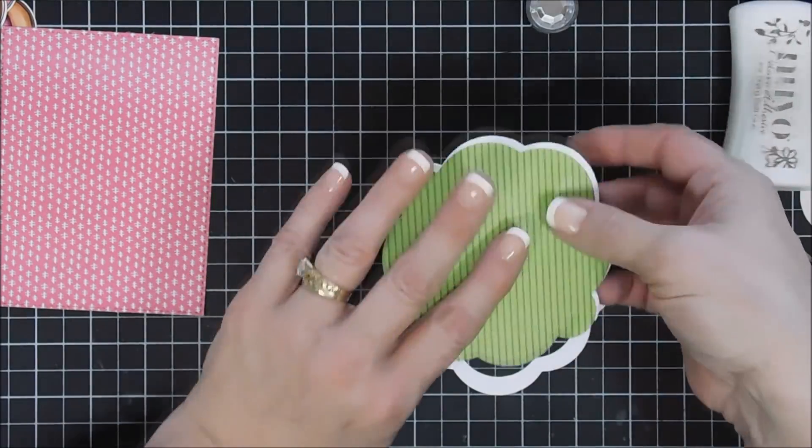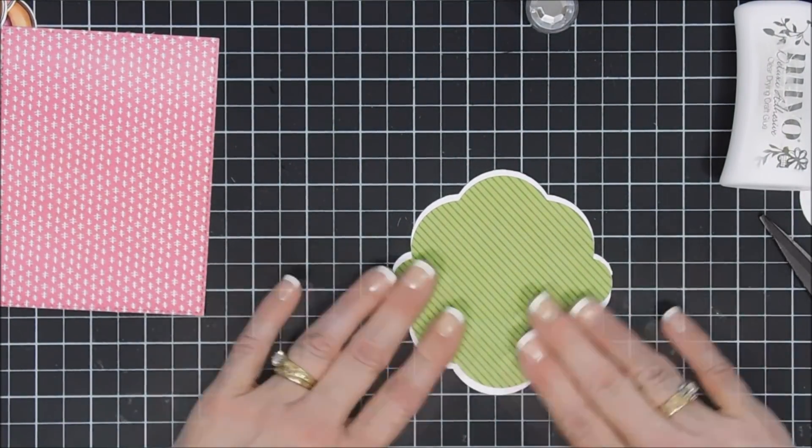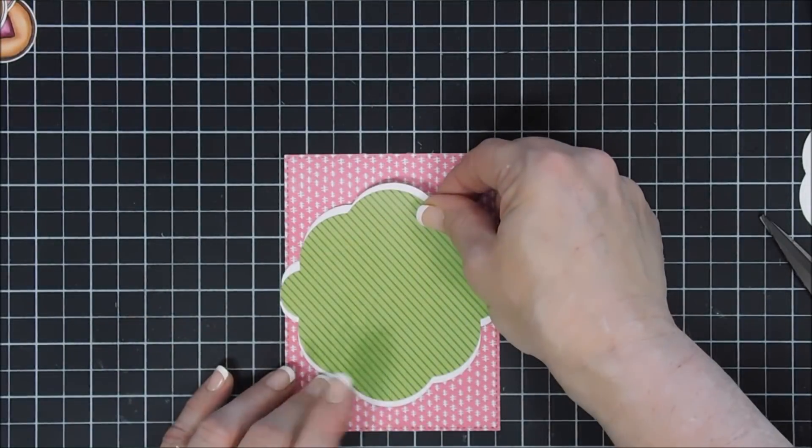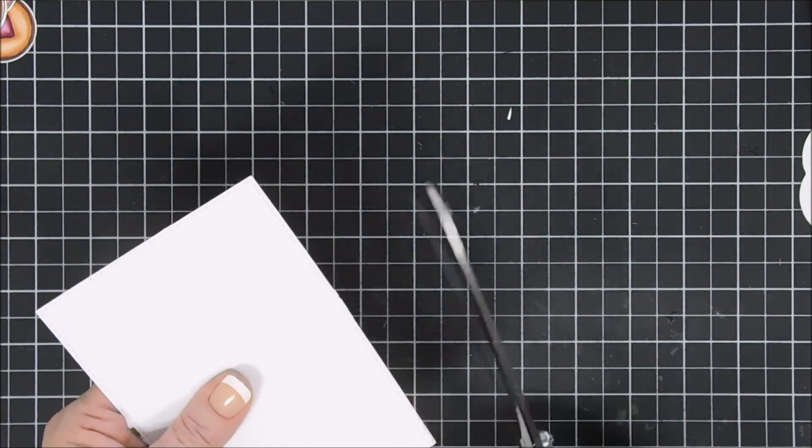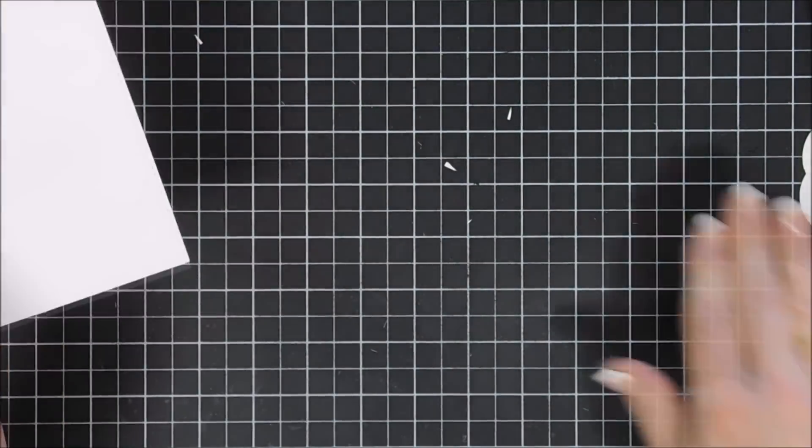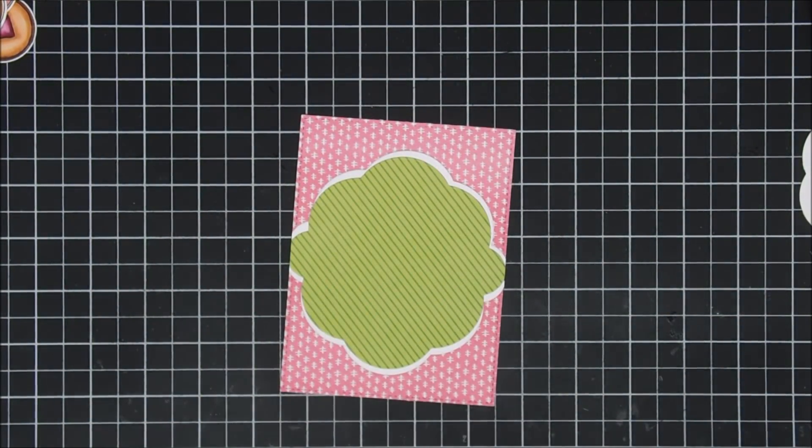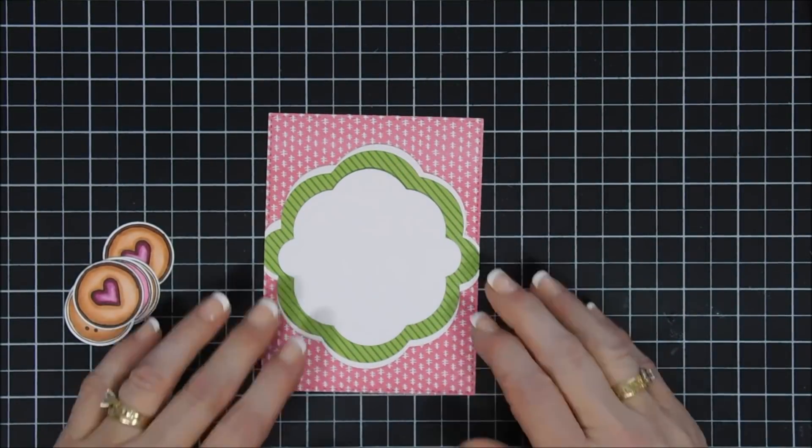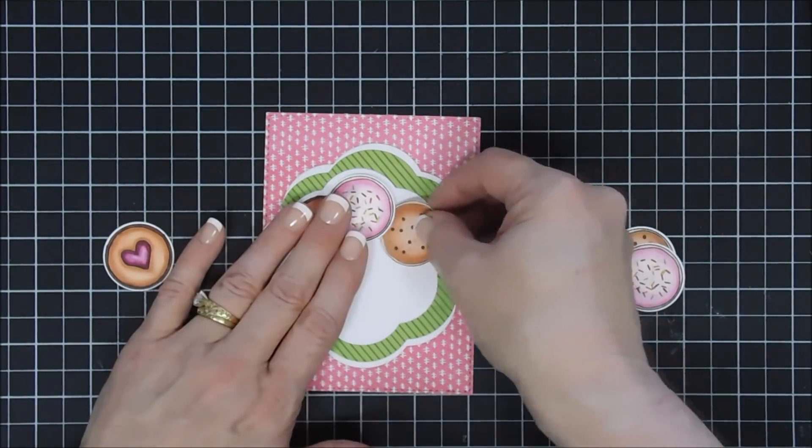Where the pieces don't meet, I wasn't too worried about that because it's going to overhang on the paper just a little bit and I can trim that off. Okay, using my tape runner, I adhere that to my panel. Then next, we're going to arrange our little cookies on our white panel here. I want the three on the top and then three on the bottom, kind of overlapping them. So I'm kind of playing around with my placement.